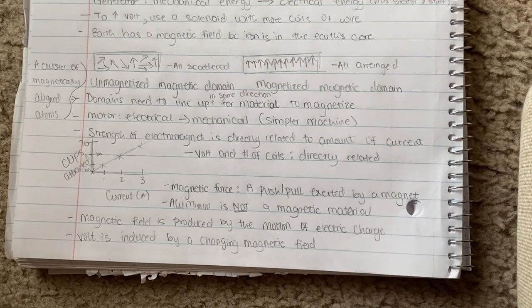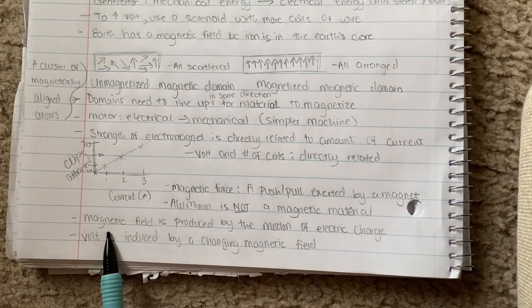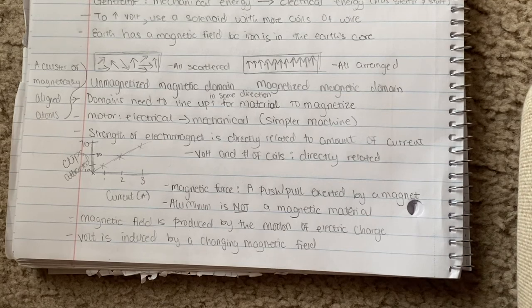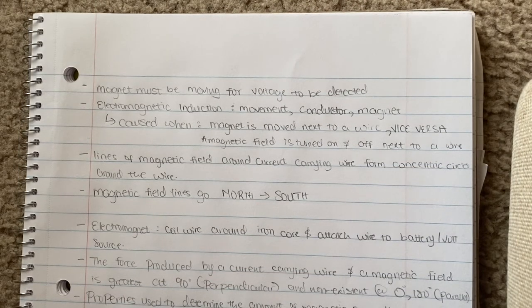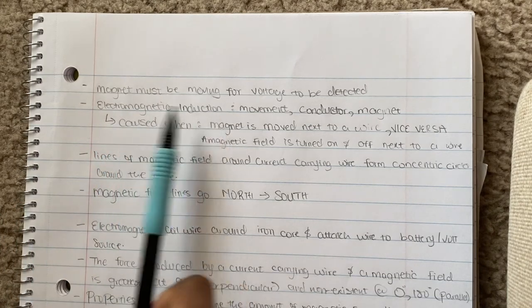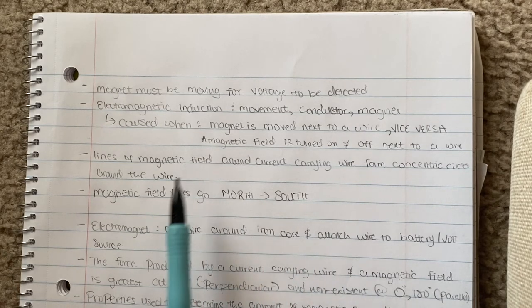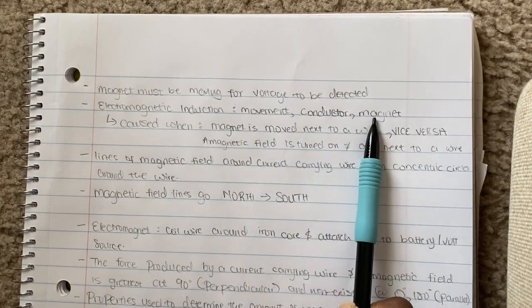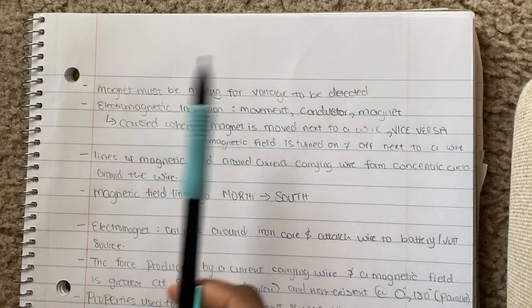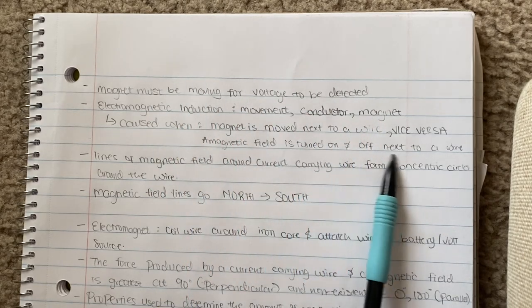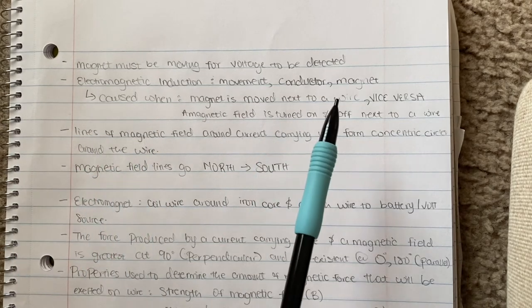Magnetic field is produced by the motion of electric charge, which is basically the movement of electrons, I think. That's how you get a magnetic field. Voltage is induced by changing that magnetic field. So you get voltage out of changing that. A magnet must be moving in order for voltage to be detected. Electromagnetic induction is when you have the magnet producing current this time around. You need movement, you need conductor which is a wire, and you need a magnet. It is caused when a magnet is moved next to a wire or vice versa. You can also move the wire next to the magnet. A magnetic field needs to be turned on and off next to the wire.